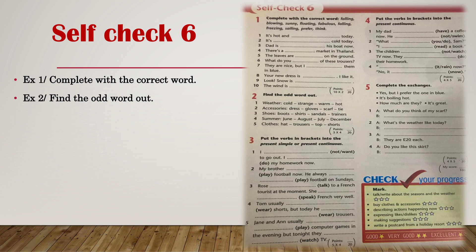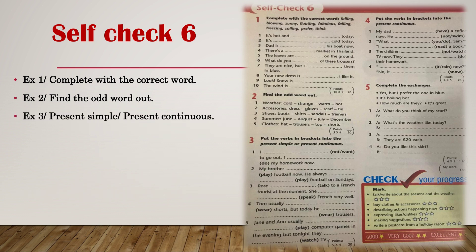In Exercise 3, you are going to put the verbs in brackets into the present simple or present continuous. For example: 'I blank space not want to go out.' When we have 'want,' we always use present simple — 'I don't want to go out.' Another example: 'I blank space do my homework now.' 'Now' is a time expression for present continuous, so the answer is 'I am doing my homework now.' Now you are going to do the rest.